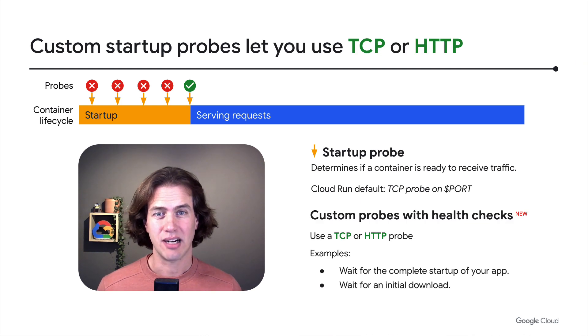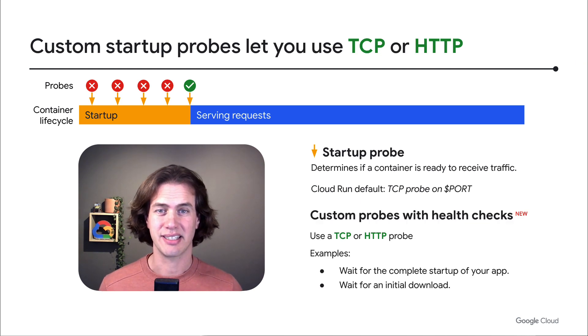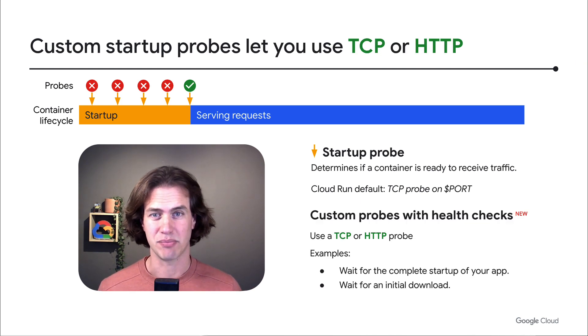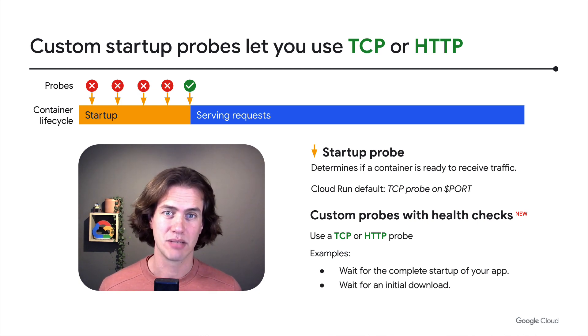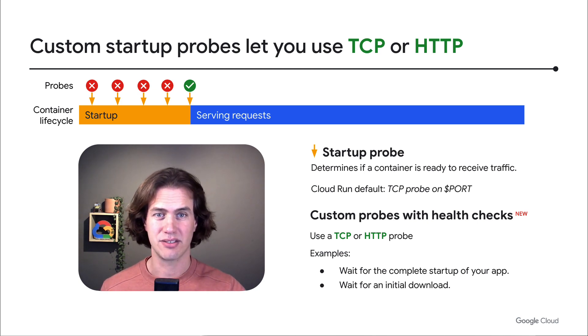With Cloud Run Health Checks, you can set an HTTP probe, and this is useful for apps that start listening on a TCP port before they are ready to serve requests.